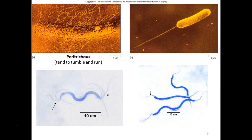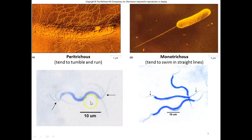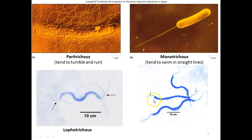A single flagella would be monotrichous or polar, and these guys can swim in pretty straight lines — they can really dart around. The shape of those two is bacillus or rod-shaped. These two are spirillium, not spirochetes. Spirochetes have much tighter helical turns and are flexible; spirillium are rigid. This organism has multiple flagella at both ends — lophotrichous. One flagella at each end is amphitrichous.